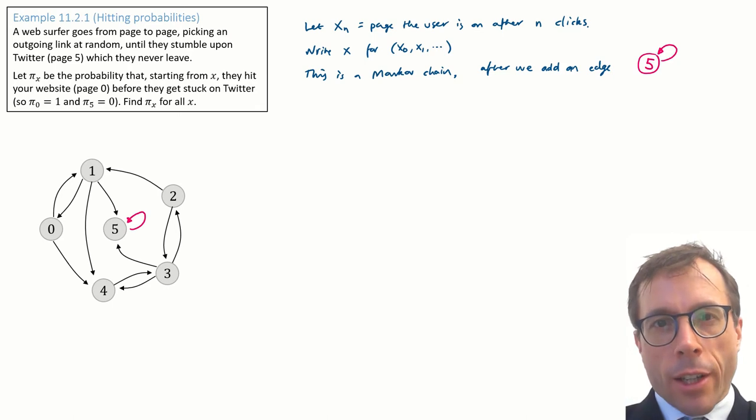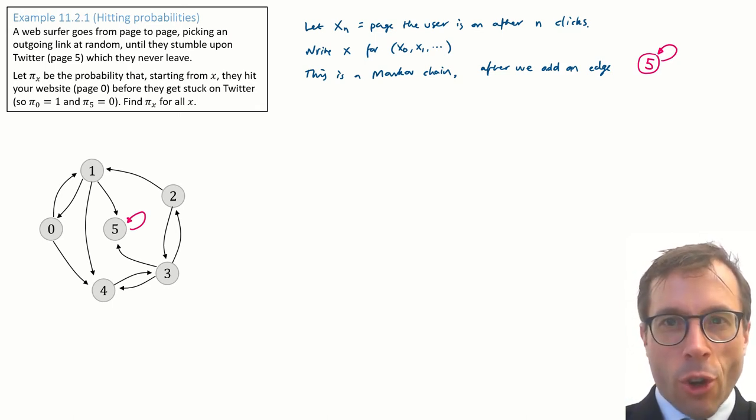Actually, to be technical, a Markov chain is an infinite sequence and it's not allowed to just stop. So we need to add an edge from page 5 back to itself, and then it's a proper Markov chain.